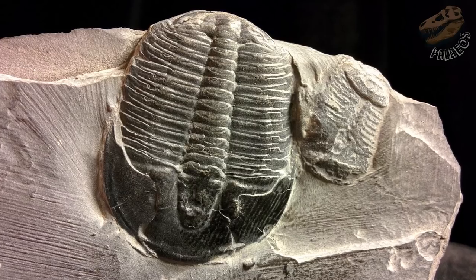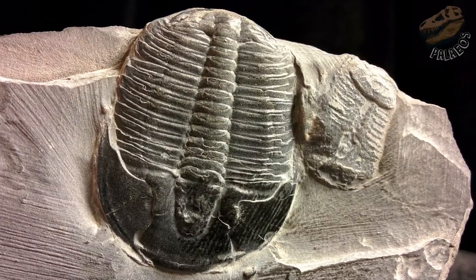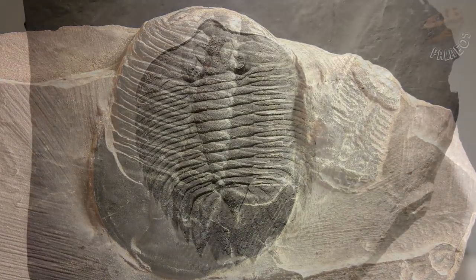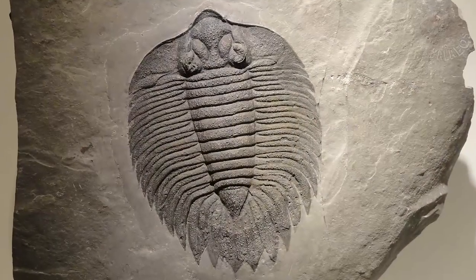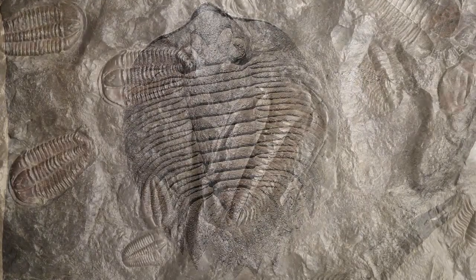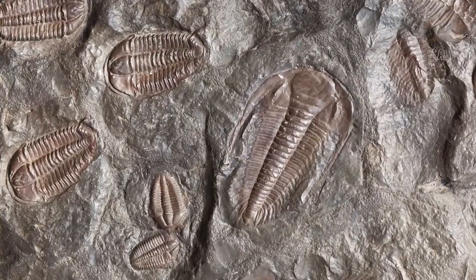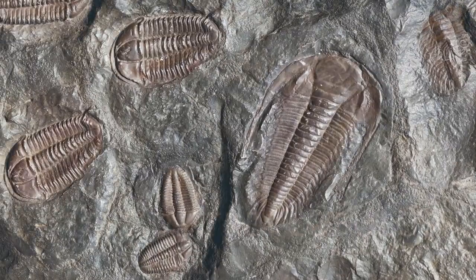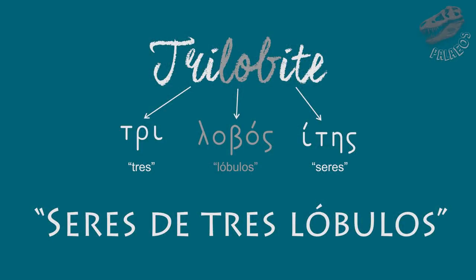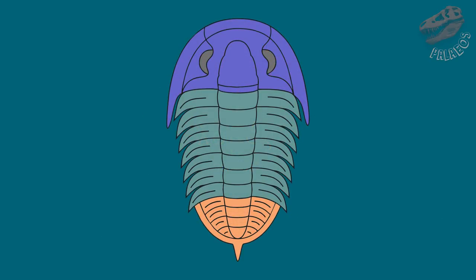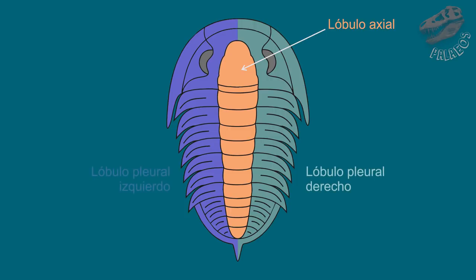Los trilobites son uno de los grupos de organismos fósiles más ampliamente conocido, tanto por los científicos como por algunos aficionados al mundo paleontológico. Son fácilmente reconocibles y figuran entre los fósiles comerciales más abundantes. Su nombre significa tres lóbulos, y aunque muchos piensan que esto hace referencia a estos tres, en realidad se refiere al lóbulo axial, que se encuentra en el eje medio del cuerpo y está bordeado por los lóbulos pleurales derecho e izquierdo.